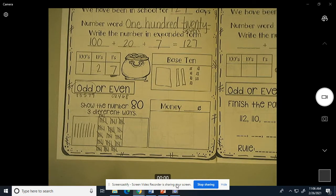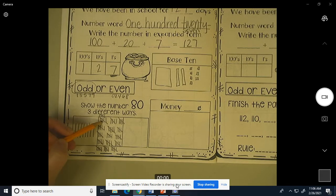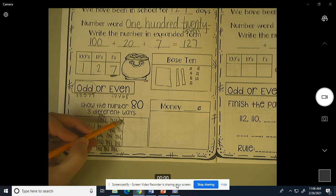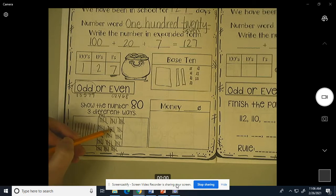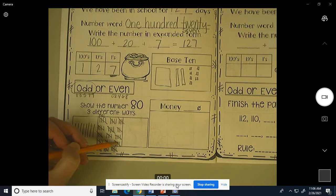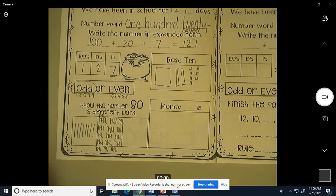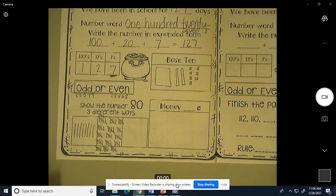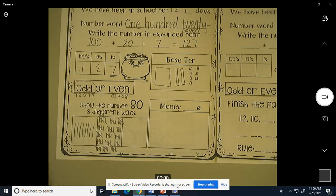All right, let's see if we got all of them. Count by fives. 5, 10, 15, 20, 25, 30, 35, 40, 45, 50, 55, 60, 65, 70, 75, 80. 80 tally marks. You might have to pause this video to get all those tally marks written. That's fine if you need to do that.